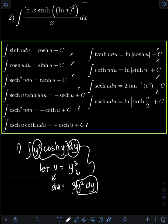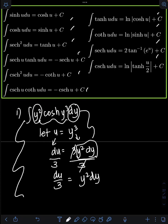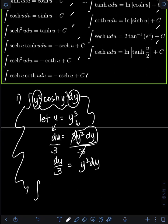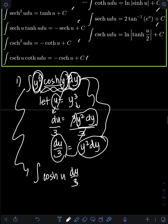We just get an extra coefficient of 3 which we don't need. So I'll get rid of that by dividing both sides by 3. So I will have du/3 equal to y squared dy, canceling out the 3. Let's now substitute into the original integral. We will have the integral of cosh(u), and then y squared dy is now du/3. This 1/3 is just a constant, so we can put it in front of the integral.